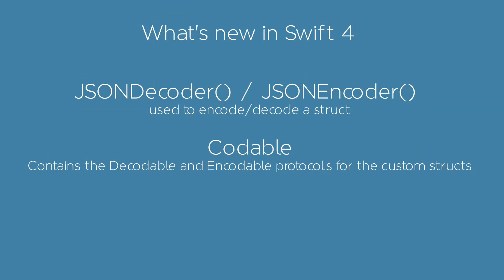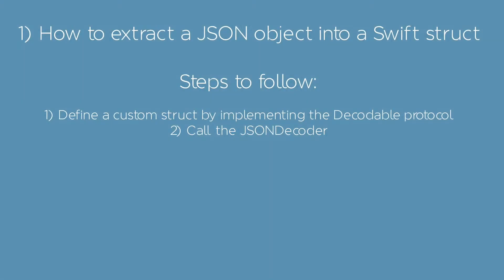Swift 4 has introduced the JSON encoder and decoder functions used to do the decoding or encoding jobs. The Codable protocol contains the Decodable protocol for struct decoding and the Encodable protocol for struct encoding. You'll firstly have to define your custom struct that implements the Decodable or Encodable protocol. If your struct should do both operations, implement the Codable protocol that contains both.